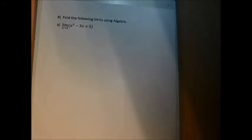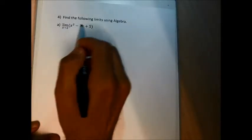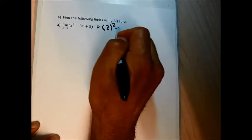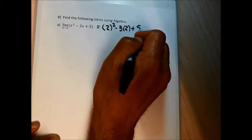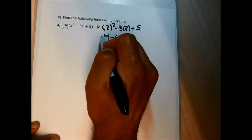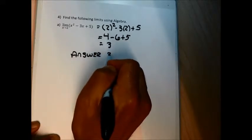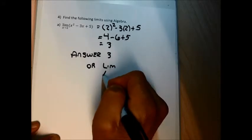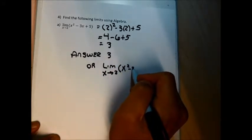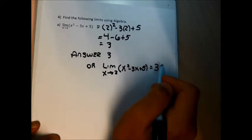Problem 4 is finding two-sided limits using algebra. My first approach when finding a limit algebraically is to take the value of x I'm approaching and plug it into the function. If I get something defined, that's the limit. For 4A, the limit as x approaches 2 of x² - 3x + 5 is just 2² - 3(2) + 5 = 4 - 6 + 5 = 3. My answer is 3.